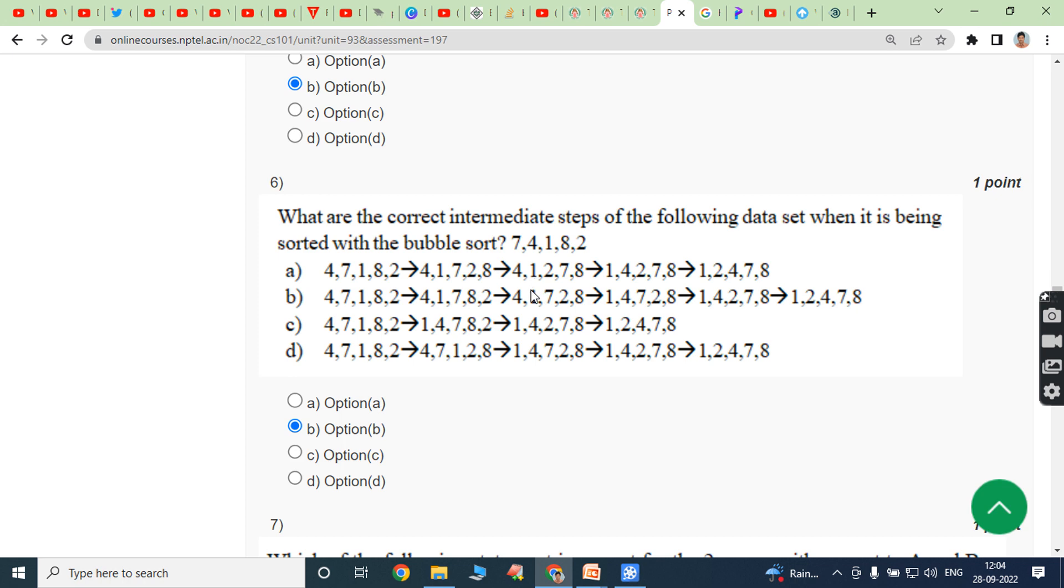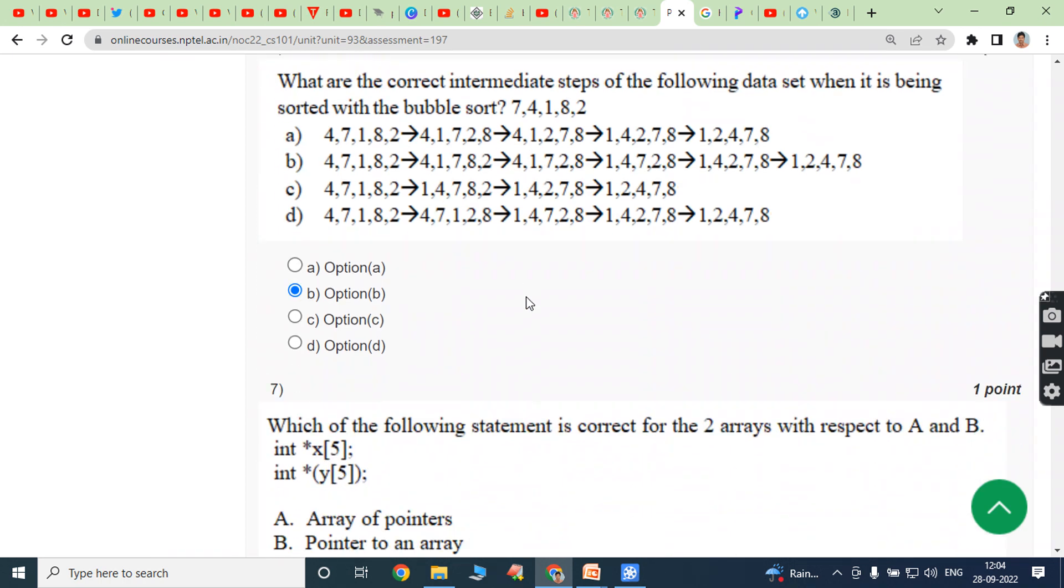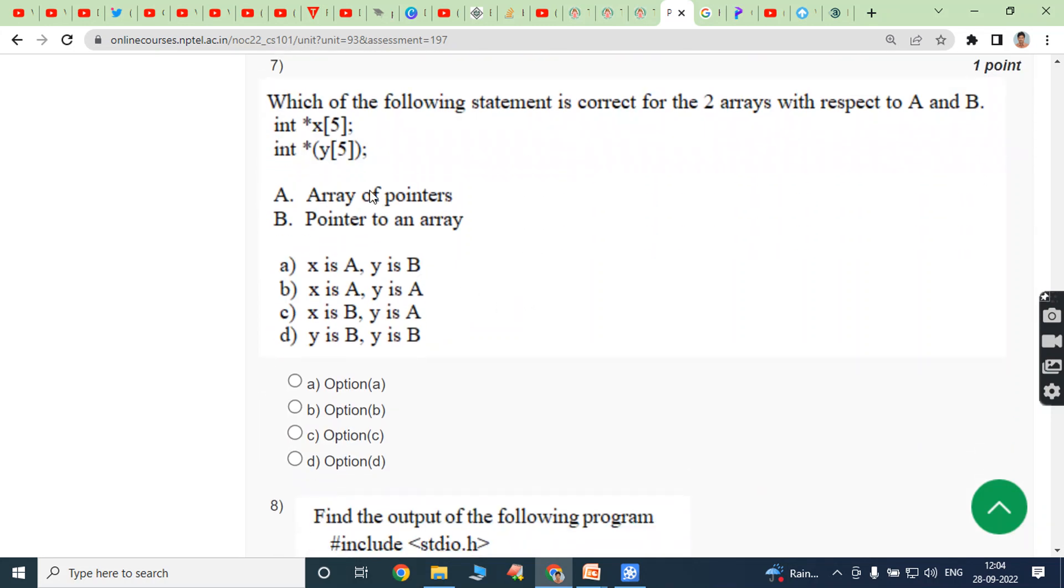Next one: Which of the following statement is correct for the two arrays with respect to A and B? Int star x of 5, int star y of 5. A is array of pointers, B is pointer to an array. So what is the correct answer? So here x is A and y is B.